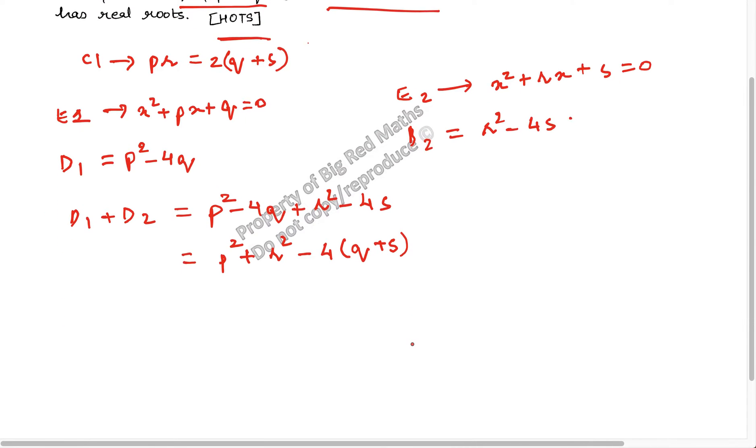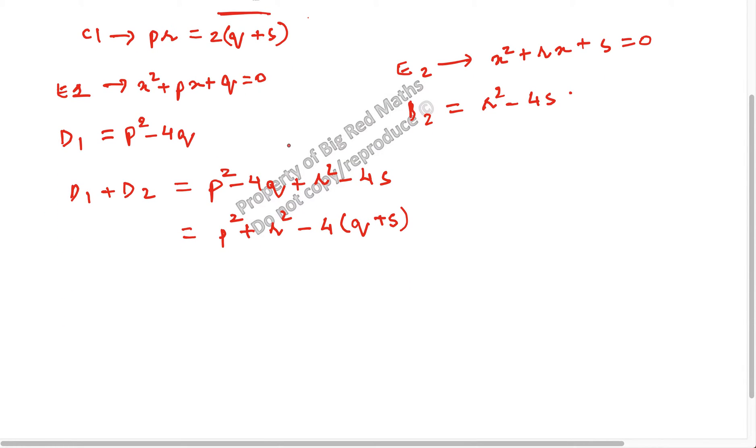Now you see from the condition 1, what do I know? From here, what do I know? I know what is the value of q + s in terms of p and r. PR by 2. Q + s is equal to PR by 2. Let me put q + s as PR by 2 here.